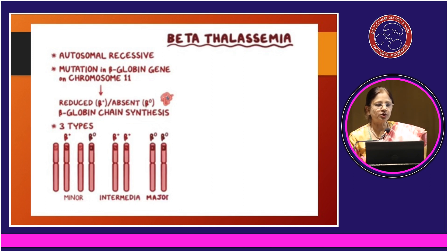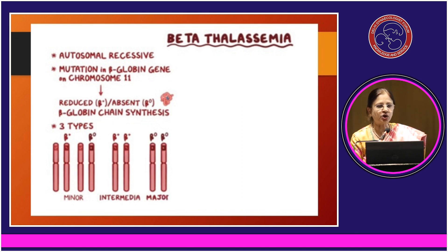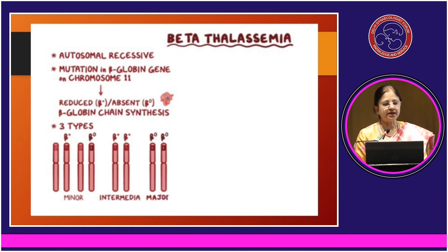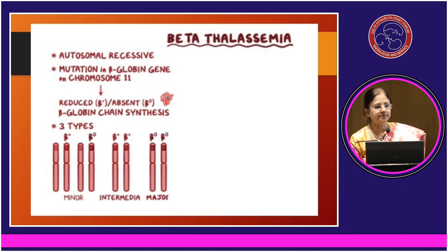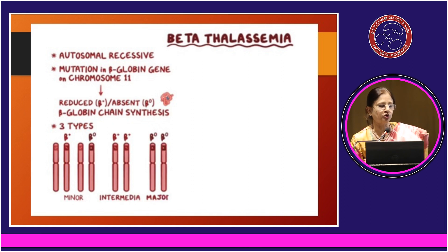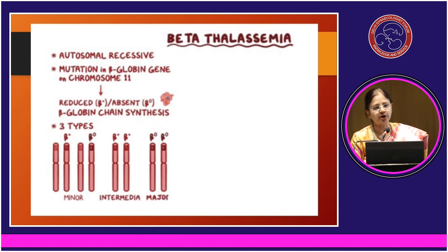Beta thalassemia is an autosomal recessive disorder due to a mutation in the beta globin chain on chromosome 11. When the beta chain is absent or reduced, it causes beta thalassemia, which can be major, minor, or intermediate. Minor is when the child inherits one deficient chain from either parent. Intermediate is when the beta chain is not absent but produces less beta hemoglobin. Major is when both beta chains are absent, causing the most severe disease in the child.